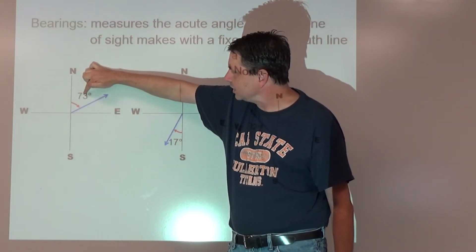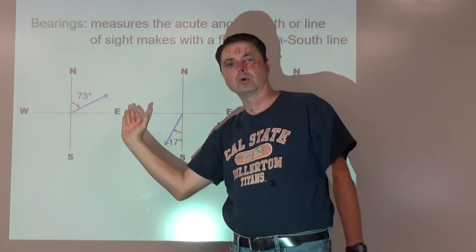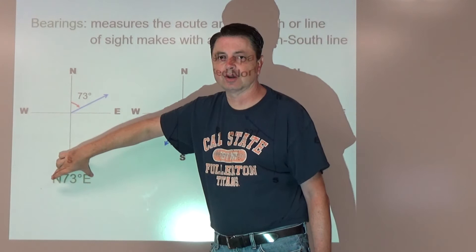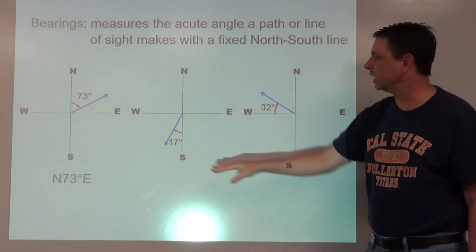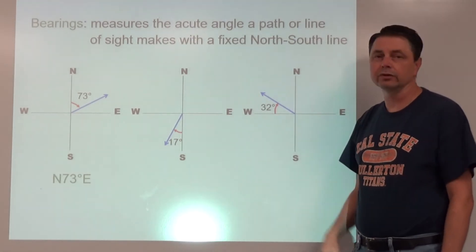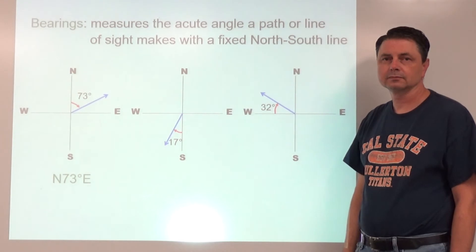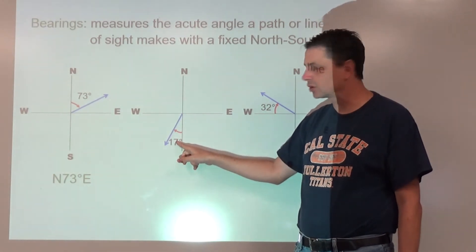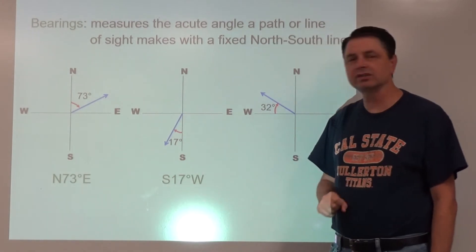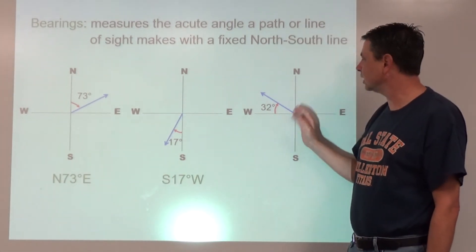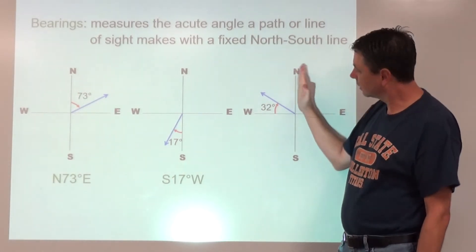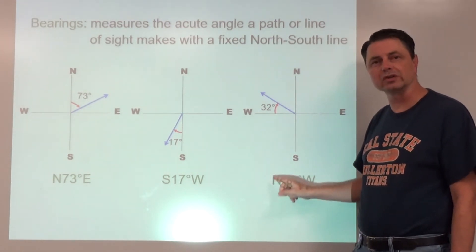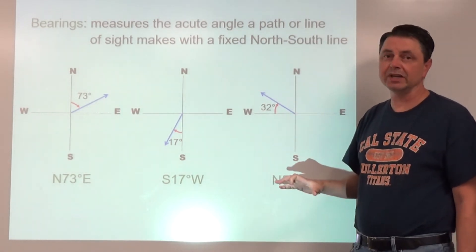The way that we write that is north 73 degrees east, and this is the notation that we use. See if you can come up with the bearings representation for these other two. This one's pretty simple, south 17 degrees towards the west, so S 17 degrees W. And then this one, it's going up, so north 58 degrees towards the west, so it's got to be from the fixed north or south line first. There are other ways of doing it, but this is how we're going to do all of ours.